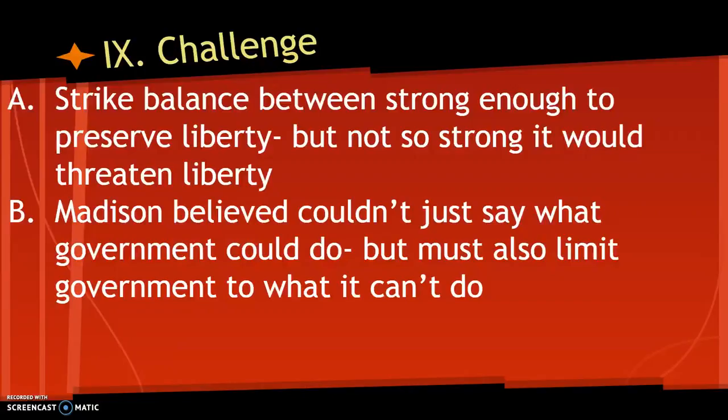At the framing, they were supposed to be just changing the Articles of Confederation. The idea was to find a balance between a government strong enough to preserve liberty and stop things like rebellion, but not so strong that it would threaten liberty. Madison thought you couldn't just say what the government could do — you also had to limit what the government can't do. That was Madison's key contribution.